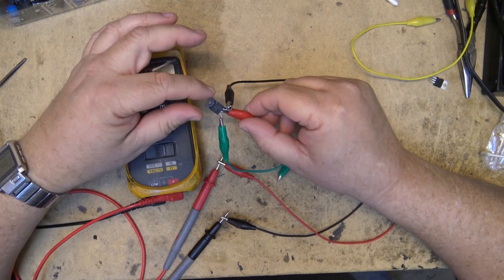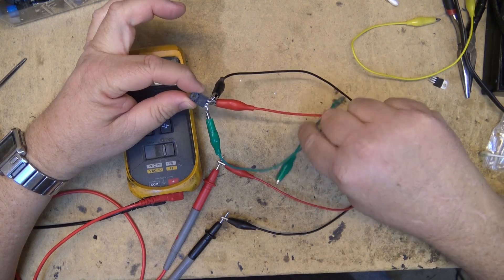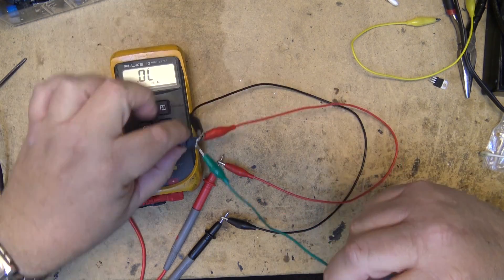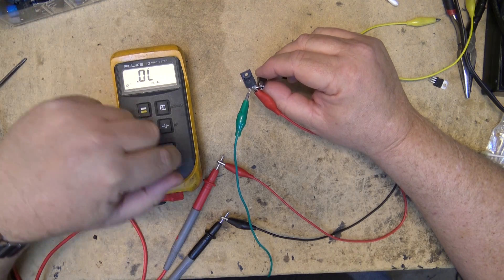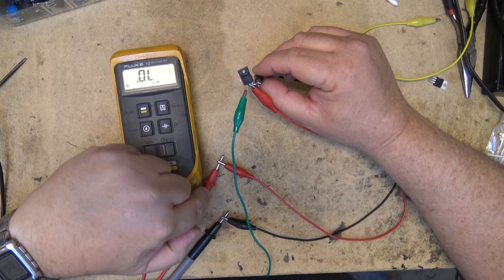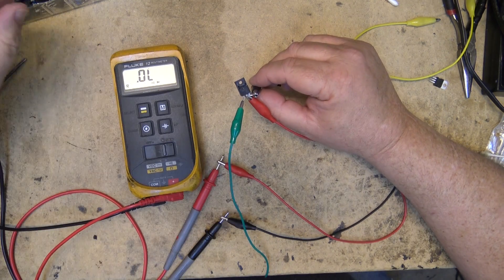So I've got the green as my gate, my drain has the positive probe connected to it, and my source has got the negative probe connected to it.